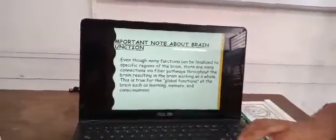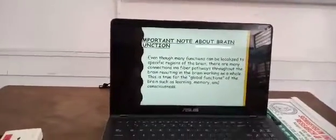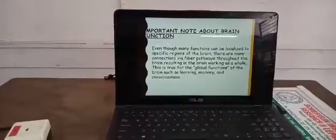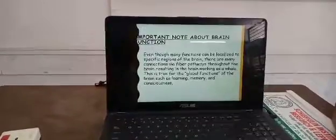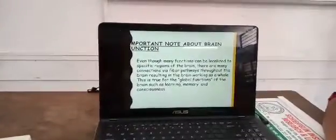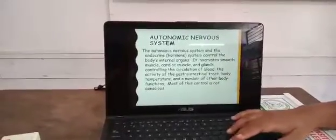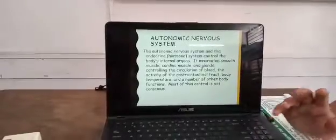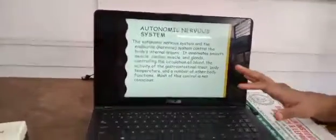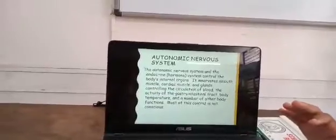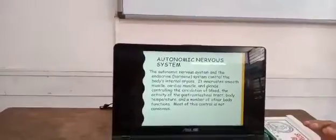An important note about brain function: even though many functions can be localized to specific regions of the brain, there are many connections via fiber pathways throughout the brain, resulting in the brain working as a whole. This is true for global functions such as learning, memory, and consciousness. Now moving to the autonomic nervous system — something that functions without conscious control of the human being.